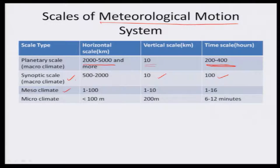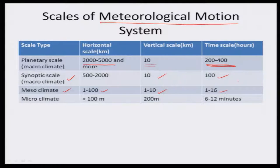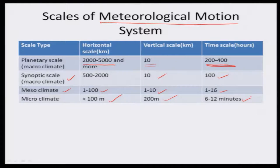Coming to the meso scale climate, this is between the micro and macro climate. Both the planetary and synoptic scales are macro climate. The meso climate covers 1 to 100 kilometers horizontally — maybe a district or part of a district — with a vertical scale of 1 to 10 kilometers and a time scale of 1 to 16 hours. At the micro level, the scale is less than 100 meters — not kilometer, but meter — and the time scale is only 10 to 12 minutes. This is the scale used to develop weather forecasts in meteorology, also applied in agriculture.